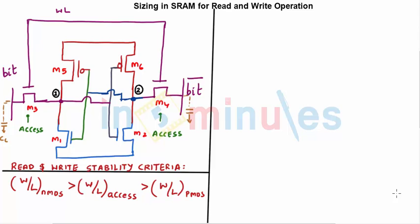Welcome to this clip. The agenda is to understand the sizing in SRAM for the read and write operations. We have already seen the working of the six-transistor SRAM — the same diagram is in front of you. I've also shown how to make the diagram with cross-coupled inverters, with access transistors M3 and M4, and cross-coupled inverters labeled M1, M2, M5, M6. The output of the first inverter is node 1, and the output of the second inverter is node 2.